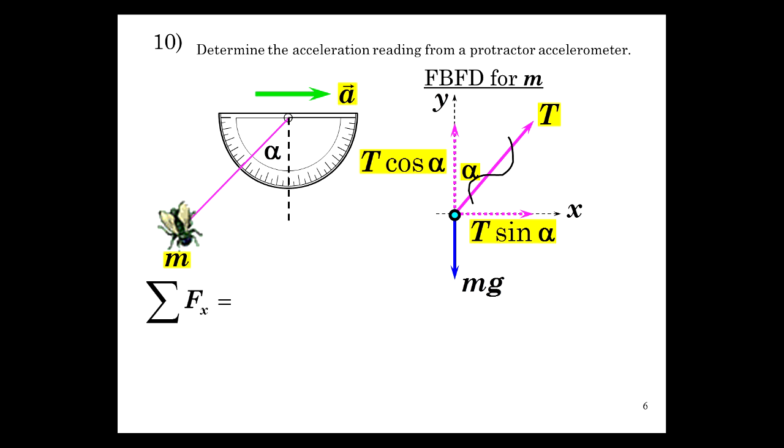Sum of Fx is t sine of alpha, and that's ma. Sum of Fy, T cosine of alpha minus mg is may, which is zero. No acceleration in the vertical direction.